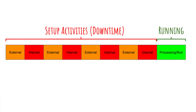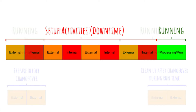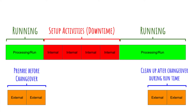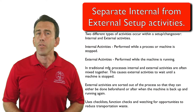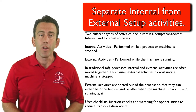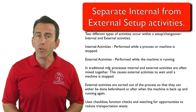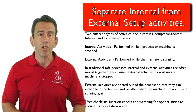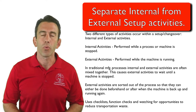In this first stage of separating internal and external setup activities, external activities are sorted out of the process so that they can either be done beforehand or after when the machine is back up and running again. This first phase usually involves a lot of checklists, function checks, and watching for opportunities to reduce transportation waste, specifically with tooling and parts required.